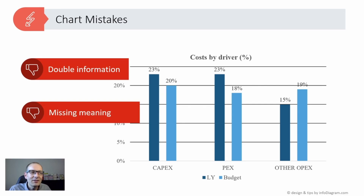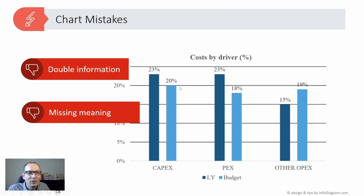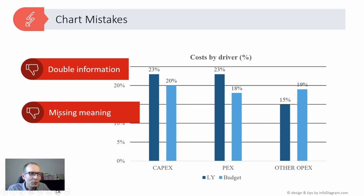The next mistake I see a lot is a missing message. Every chart usually has a message. This one could tell us we are almost on the same budget as last year, or that we are spending less depending on the time of year. That message is missing and should be written out — I'll show you ways to do that.